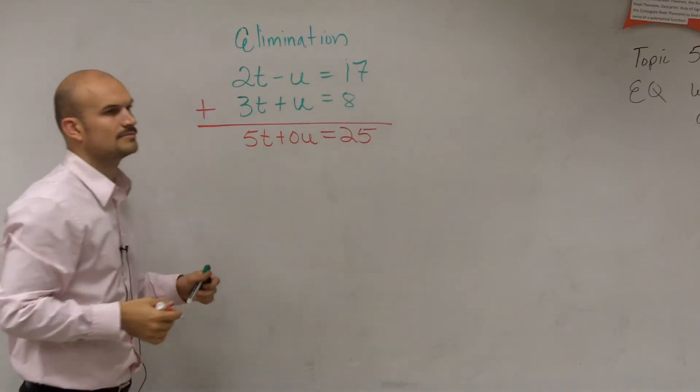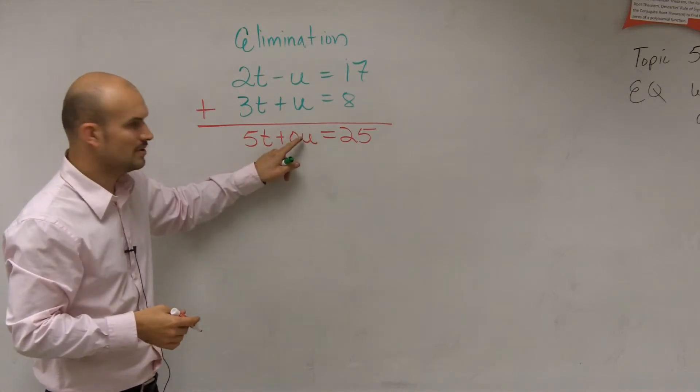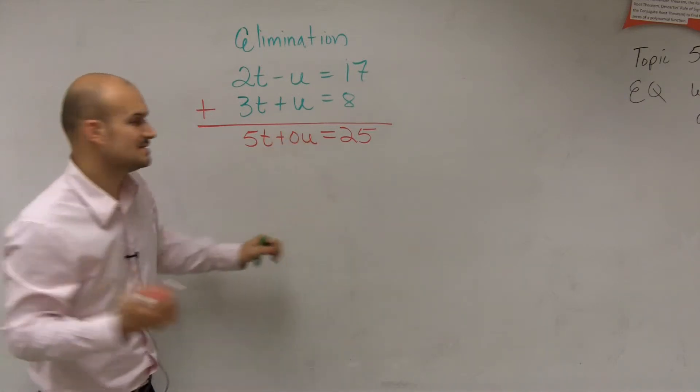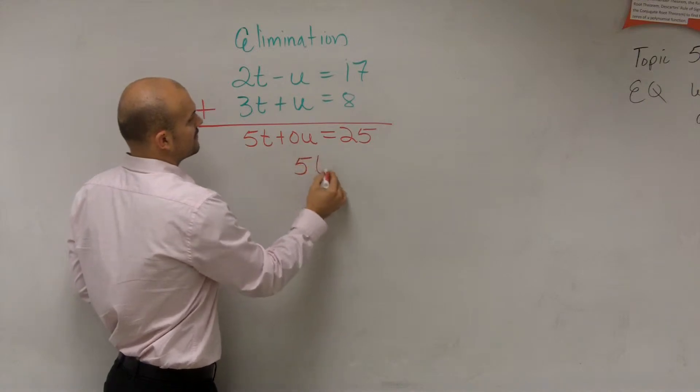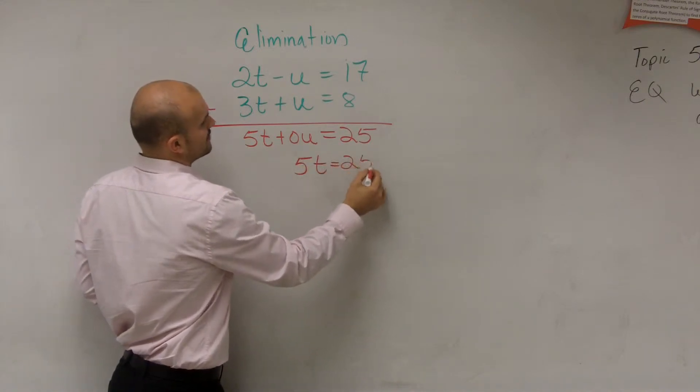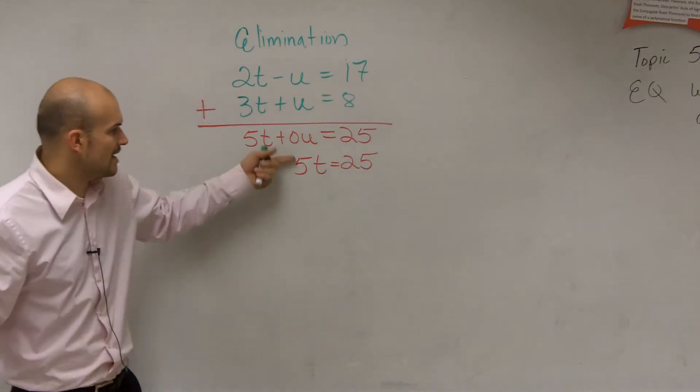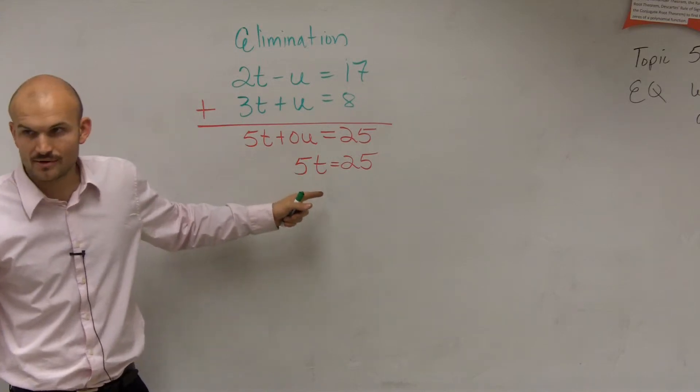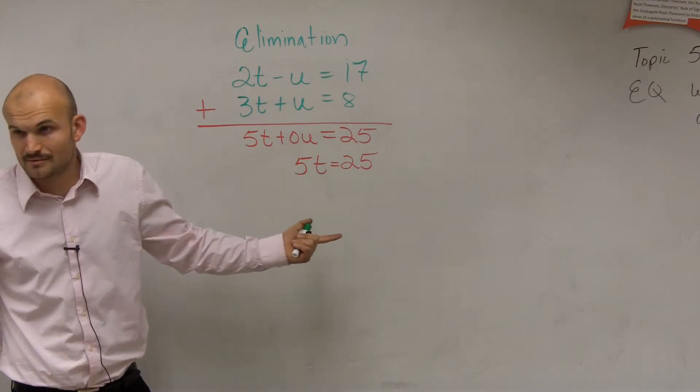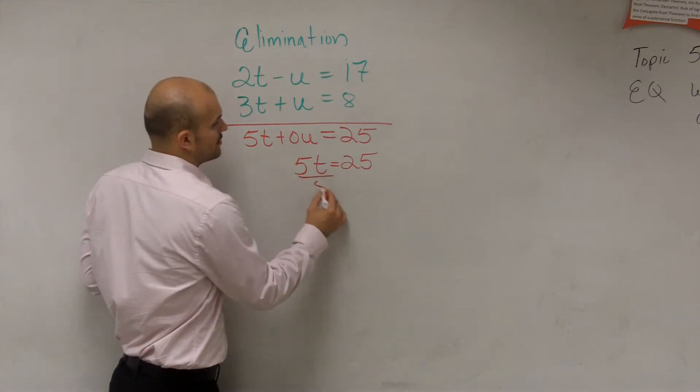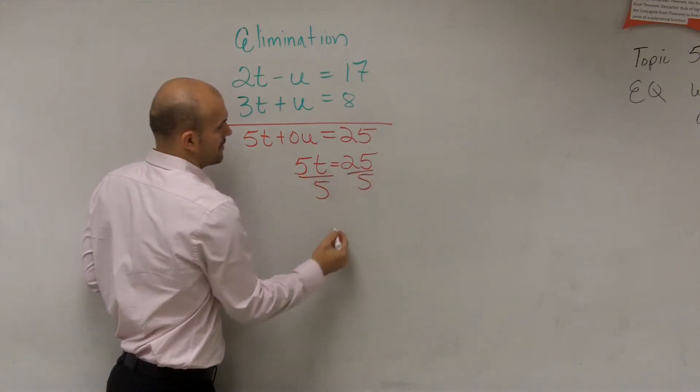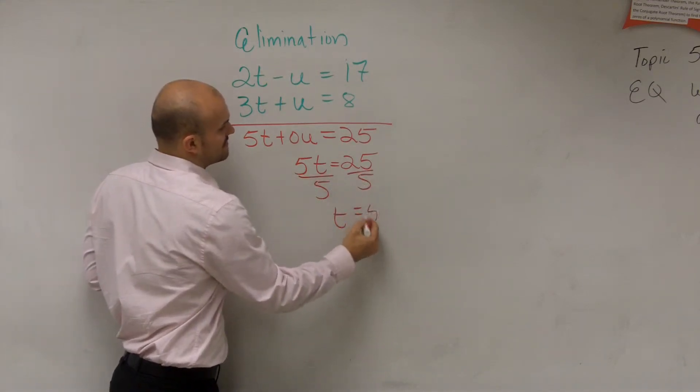I'm just trying to show you that 0 times u, obviously, is 0. So we're just left with 5t equals 25. Do you guys see how now I have an equation without a u in there anymore? So I eliminated it. That's so much easier for t to do. So now solve for t, and therefore I have t equals 5.